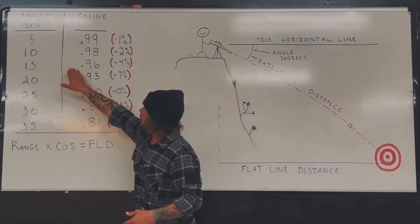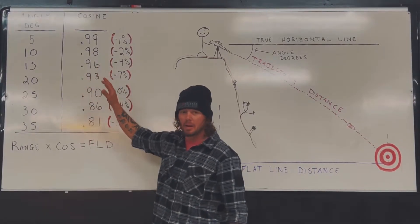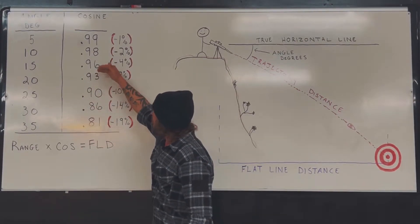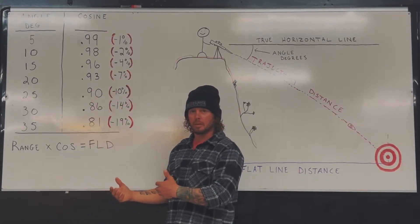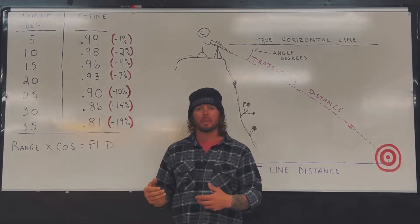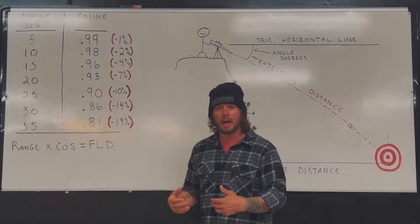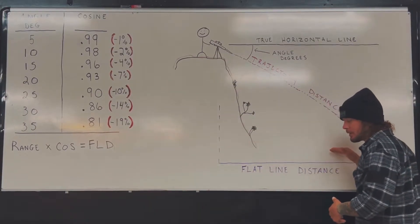We get to 15 degrees - 15 degree angle is 0.96. Now we're in that 4% range, and you can see where it starts to increase by larger numbers. So anything after 15 is typically where we want to start to factor in how that angle is affecting our flat line distance.